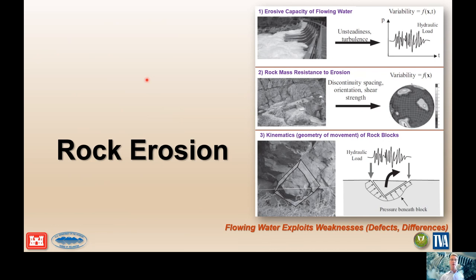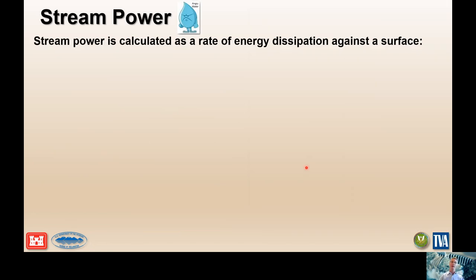For rock scour, there are three primary components: the erosive capacity of the flowing water — where is the angry water and how angry is it — the rock mass resistance component indicating how competent the rock mass is using rock mechanics principles, and the discontinuities. If discontinuities are oriented certain ways, they may be favorable or unfavorable to being plucked and removed. Stream power is calculated as the rate of energy dissipation against the perimeter or surface it acts on. We need to understand which configuration we're dealing with to calculate the appropriate stream power.